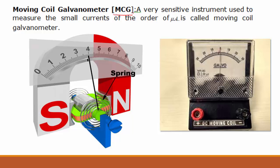The moving coil galvanometer is a very sensitive device. It is used to measure small currents of the order of microampere, that is 10 to the power of minus 6 ampere. For example, even a 0.1 microampere current will show a deflection. It is called the moving coil galvanometer.